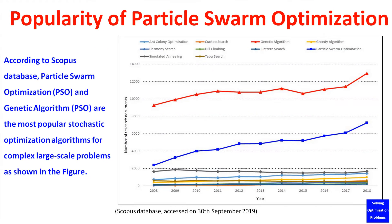Did you know that Particle Swarm Optimization is the second most popular stochastic optimization algorithm for solving complex, large-scale optimization problems? As shown in this figure, only the genetic algorithm is more popular, based on statistics data from the Scopus database.